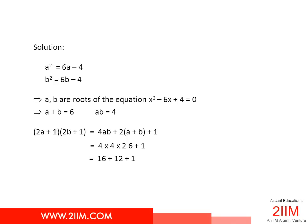Now (2a + 1)(2b + 1) = 4ab + 2(a + b) + 1.